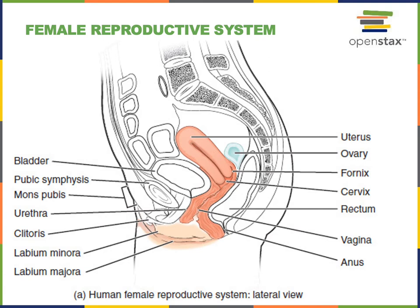This lateral view shows the relative locations of the uterus, vagina, urinary bladder, and urethra. The urinary bladder is located just anterior to the uterus, and the urethra connects from the urinary bladder out to the vulva, with the urethral opening just anterior to the vagina. The vagina connects from the vulva into the cervix of the uterus, and the region of the vagina surrounding the cervix is known as the fornix.